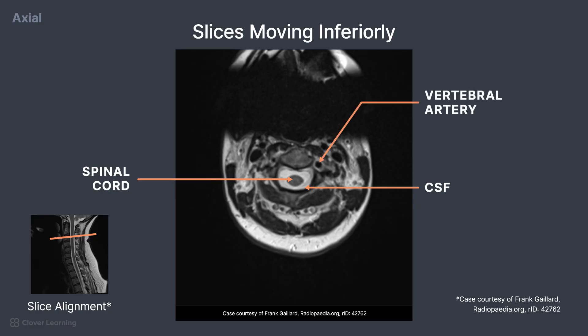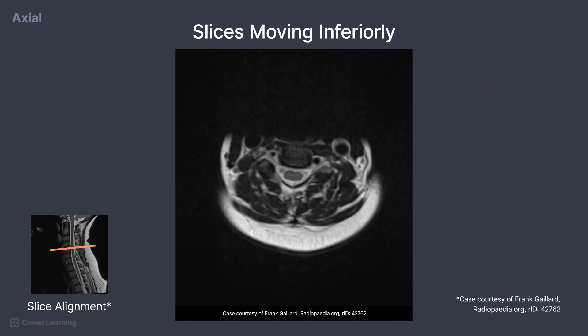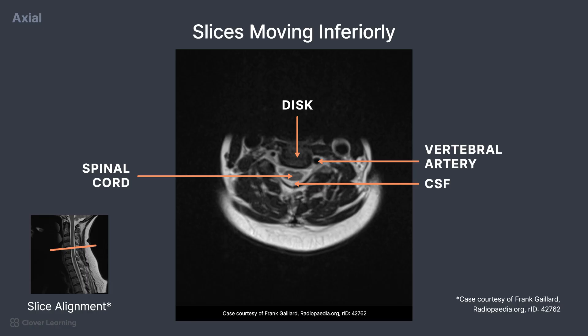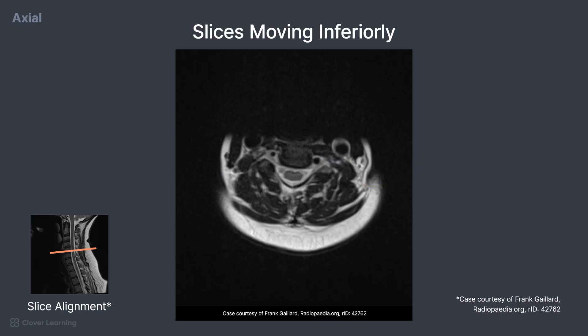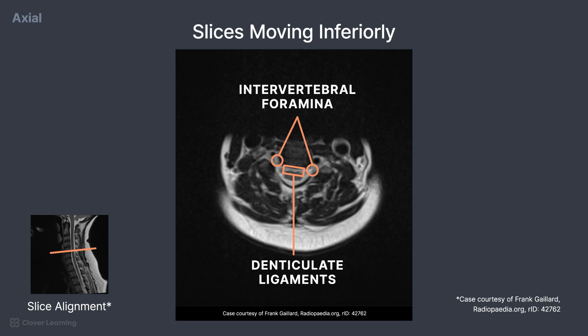The vertebral arteries are seen on the right and left of those vertebral bodies inside the transverse foramen. Jumping down to a more inferior slice, we can see the vertebral disc, with the vertebral arteries located immediately lateral and the CSF and spinal cord located immediately posterior in the spinal canal. We can determine the slice is through the disc due to the darker appearance. Some of the light gray areas around the spinal canal are denticulate ligaments. These ligaments prevent the spinal cord from moving around within the spinal canal. We can also see the intervertebral foramina, where the spinal nerves exit the spinal canal.